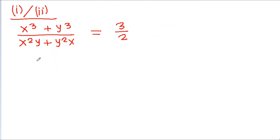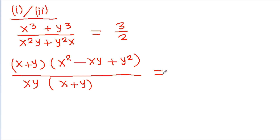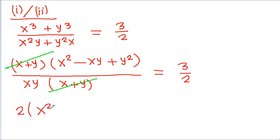Now, x cubed plus y cubed equals (x plus y)(x squared minus xy plus y squared). In the denominator, if we take xy common, we get xy(x plus y). After cancelling (x plus y) and cross multiplying, we get 2 times (x squared minus xy plus y squared) is equal to 3 times xy.